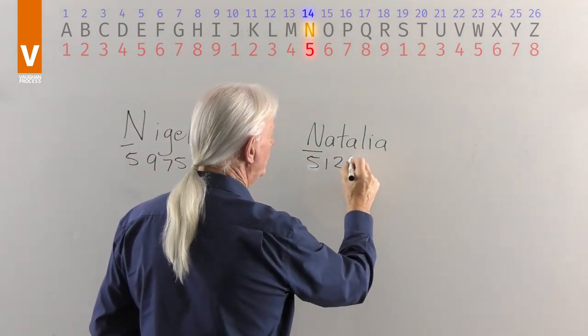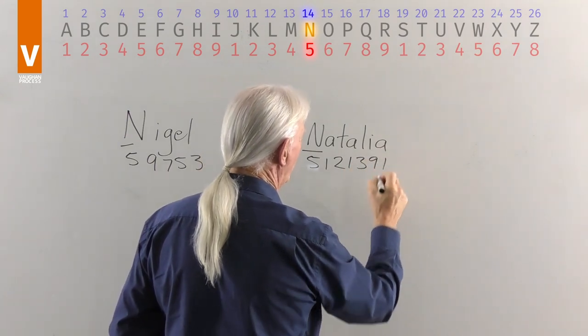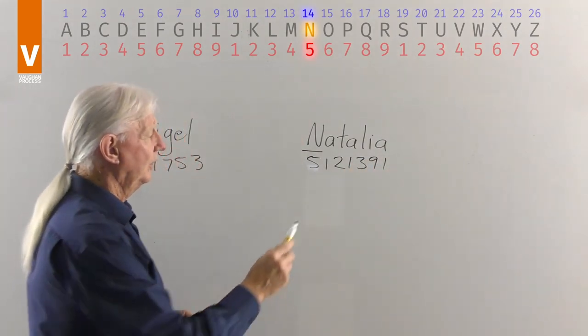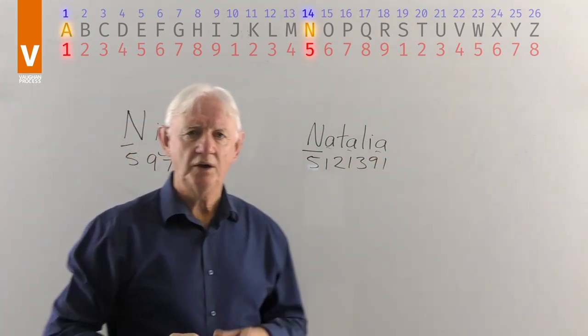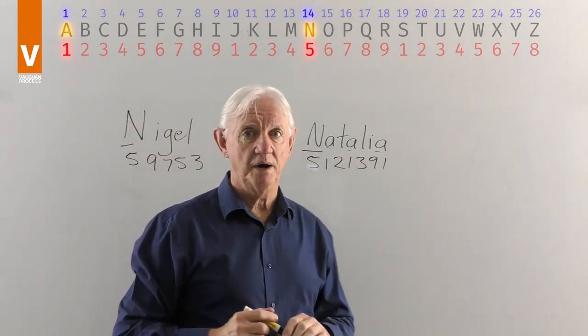5, 1, 2, 1, 3, 9, 1. Note that in Natalia there are three A's and as I have mentioned in other name analysis, the letter A represents an ox's head in hieroglyph format.